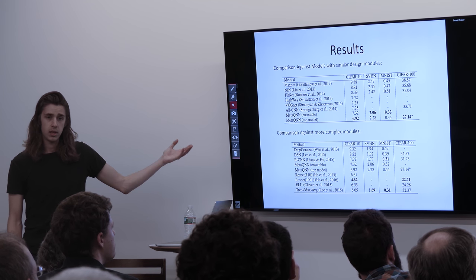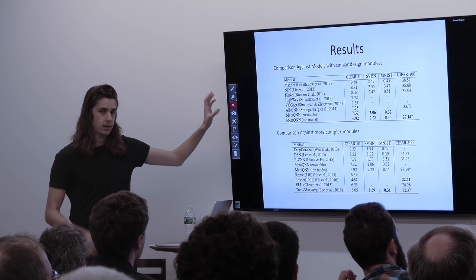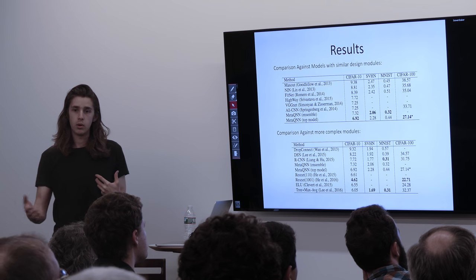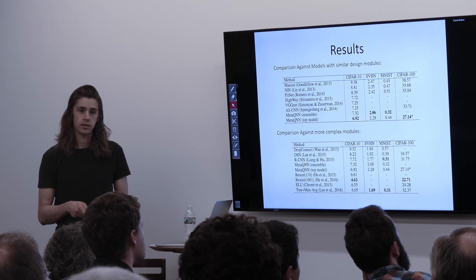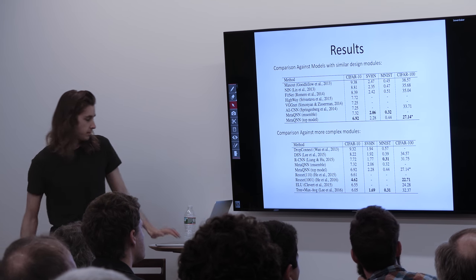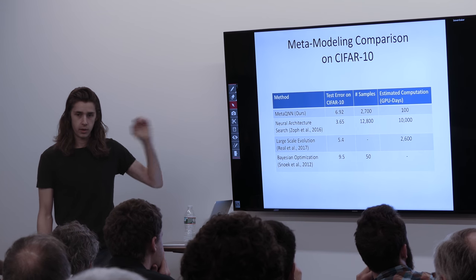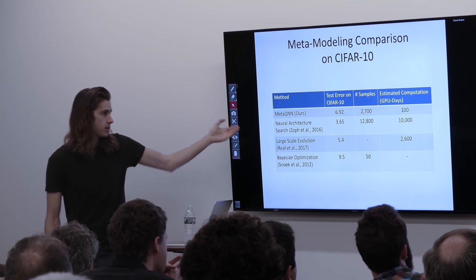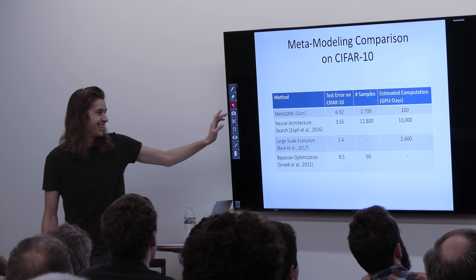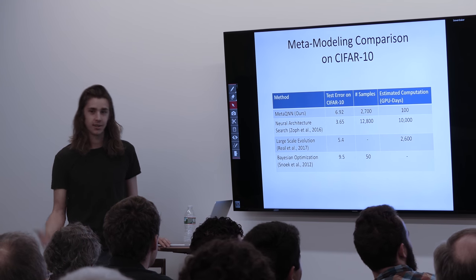The networks produced were competitive: compared to previously published human-designed networks within a similar search space, meta-QNN beat all of them. Against networks with more complicated or fancy design patterns — residual connections, branching connections, different pooling types — we don't do as well but are still competitive. A Google group published at the very same day using a policy gradient algorithm with 800 GPUs for three weeks, doing much better on CIFAR-10 but using about 100 times the computation. Another Google group used an evolution-type algorithm that trains a bunch of models, compares them, and mutates the good ones.